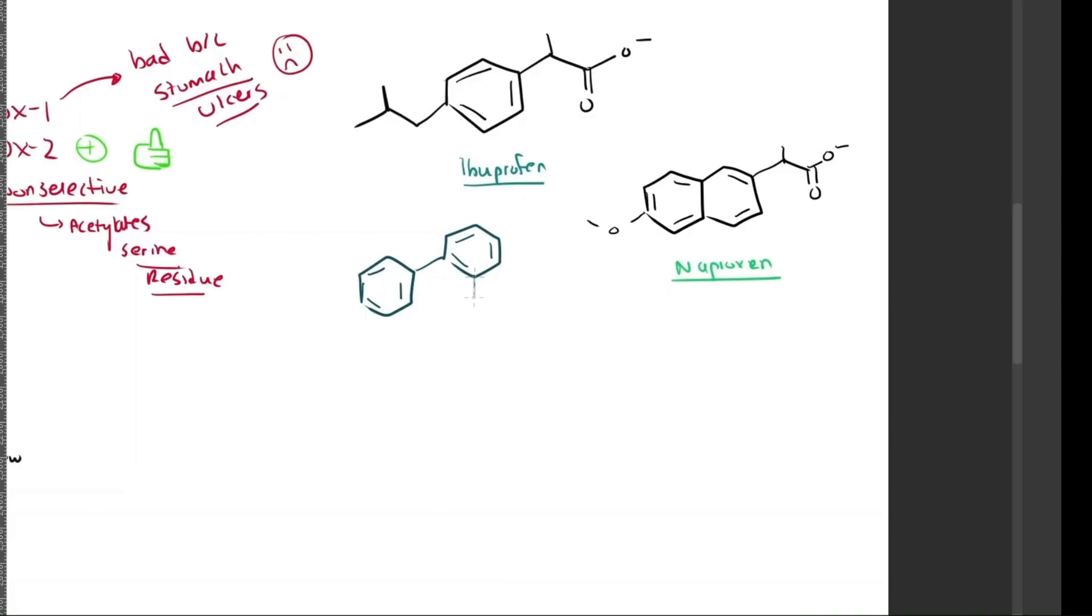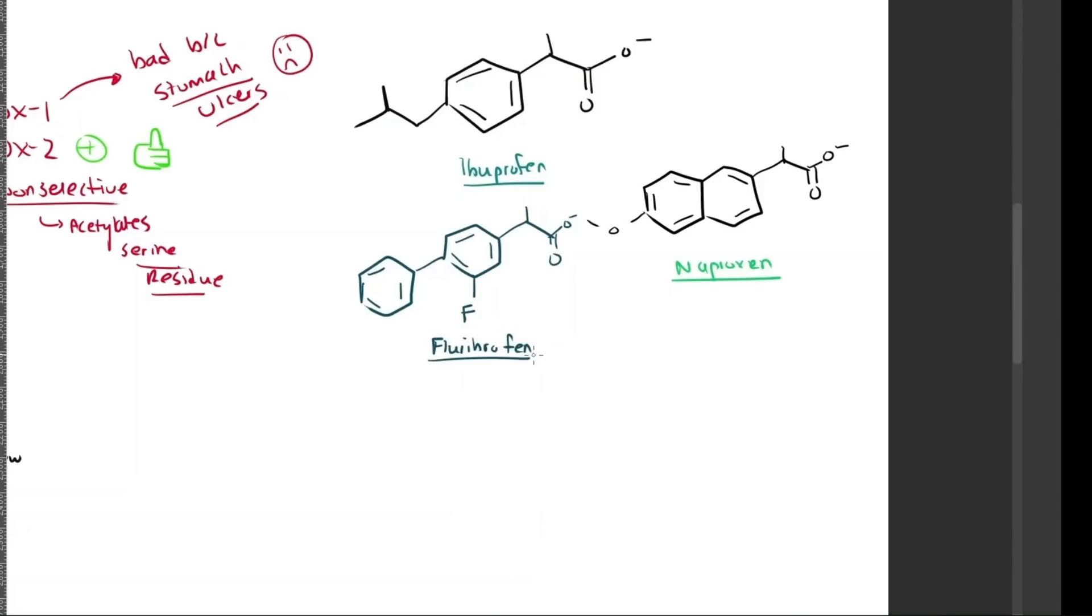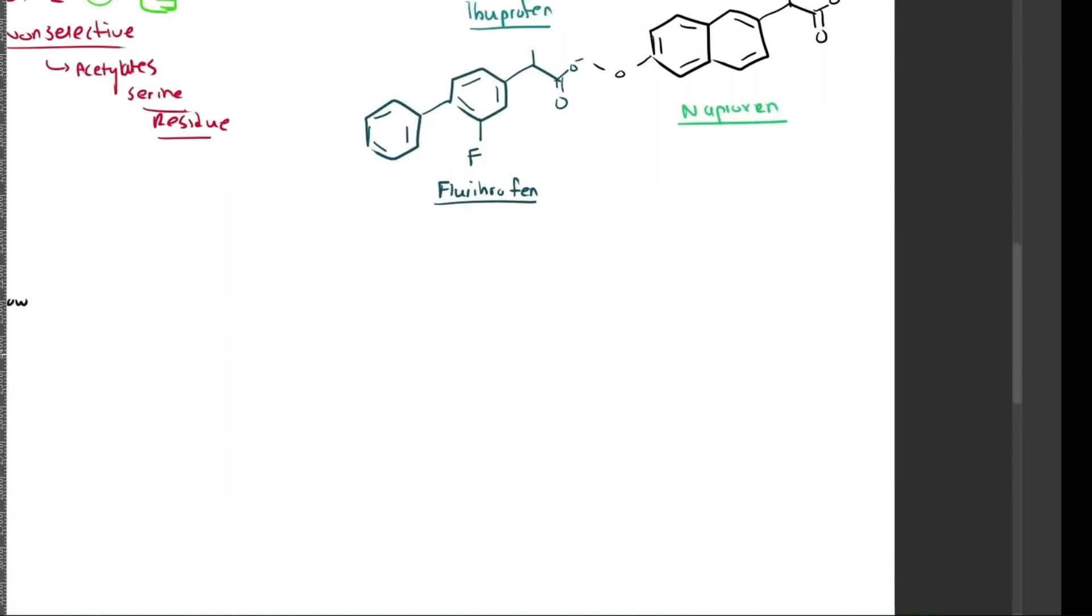Here, I have flurbiprofen. We noticed something unique about flurbiprofen in that the structure has this fluorine atom here. This is also another non-selective NSAID, but slightly more potent than the ones I mentioned before. The fluorine atom actually helps with drug absorption and metabolism. Its uses are common for arthritis and dental pain, as we said, with naproxen or Aleve as well.